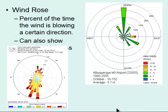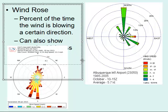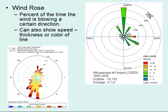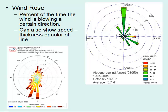Once wind speed and direction are measured, we can construct a wind rose. These show you the percent of time the wind is blowing in a certain direction. Here you can see the majority of the time the wind was blowing to the north, with some smaller instances going to the east or southeast. In this other map, the wind was mostly blowing to the south-southwest. You can determine the speed by the thickness of the line or the color.